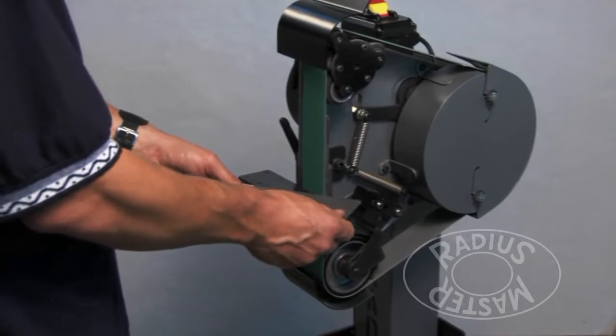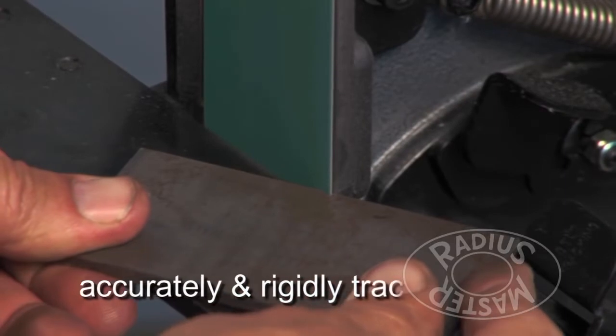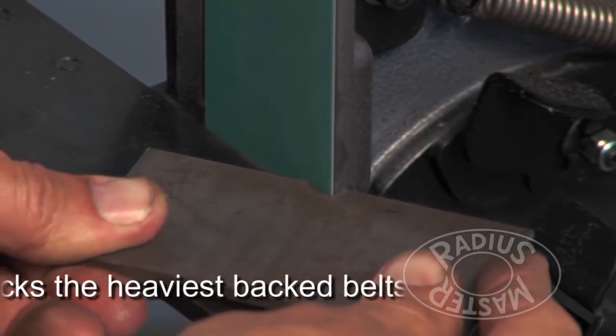Designed to track belts with the heaviest polyester backing, Radius Master's unequalled tracking allows notching and finishing into sharp corners without the belt drifting sideways.